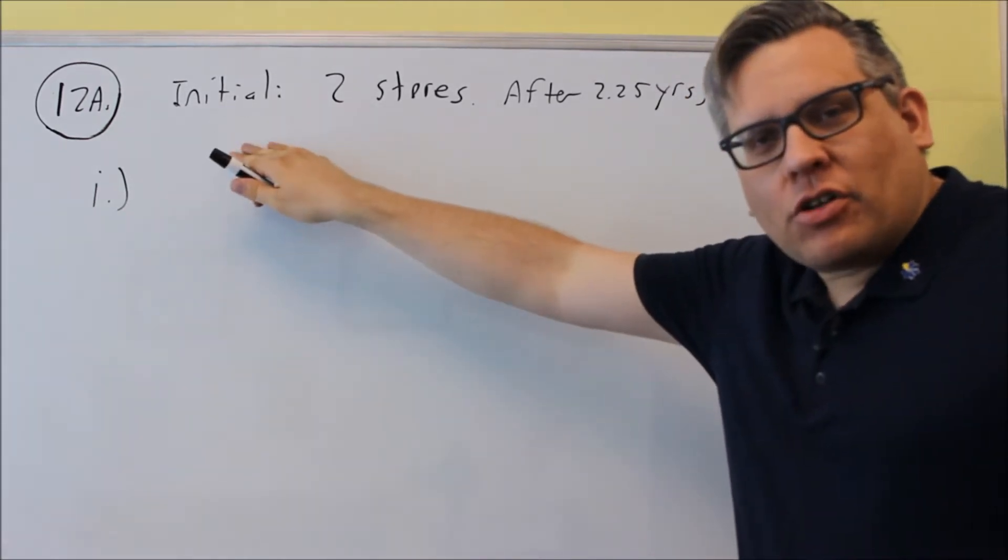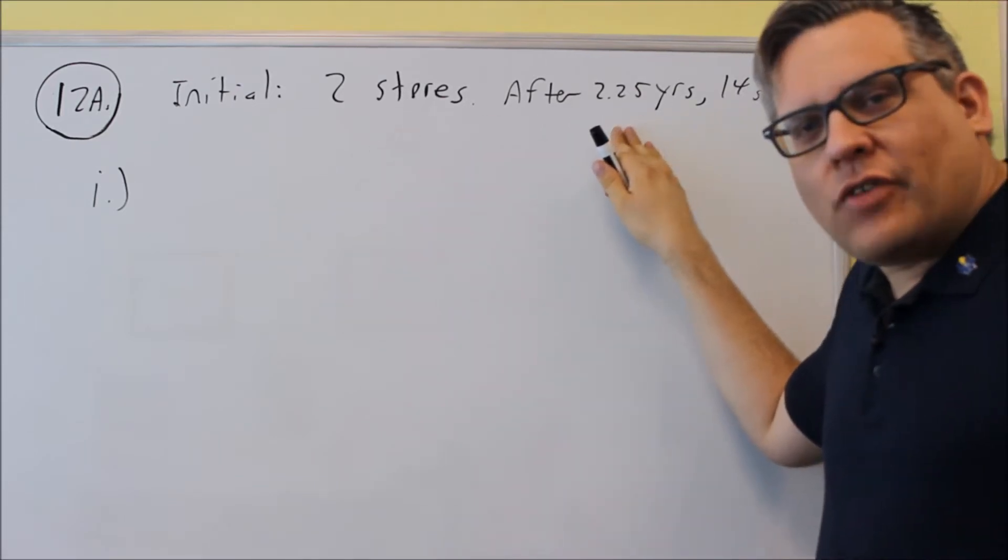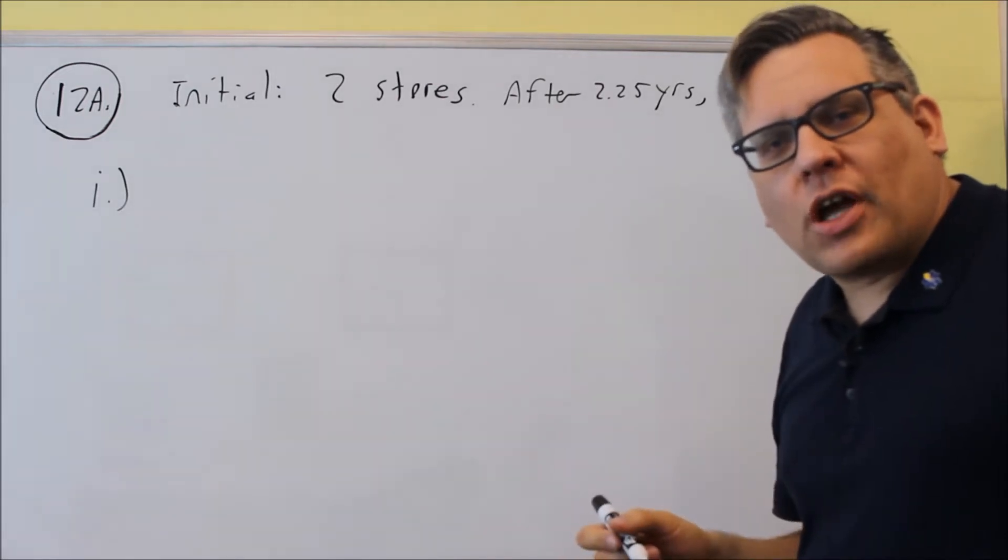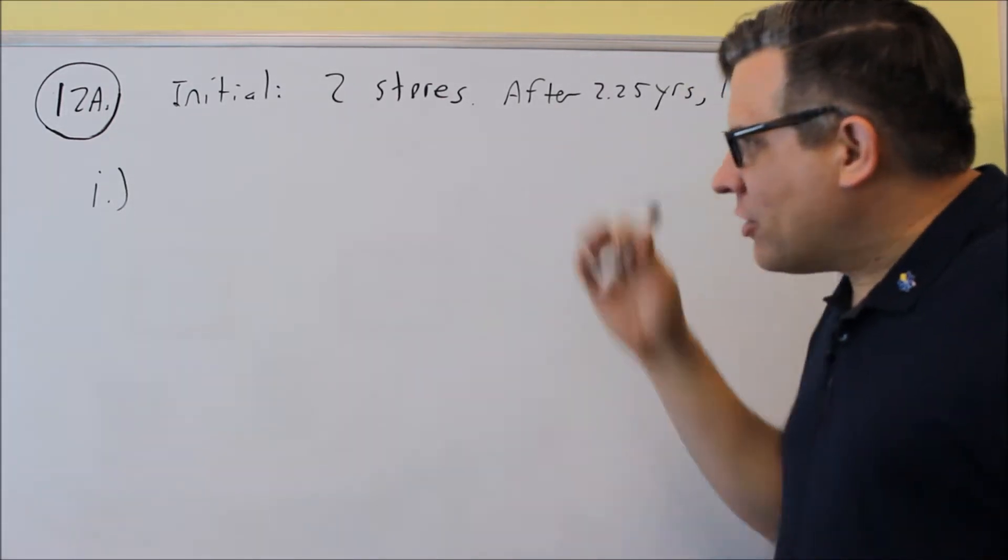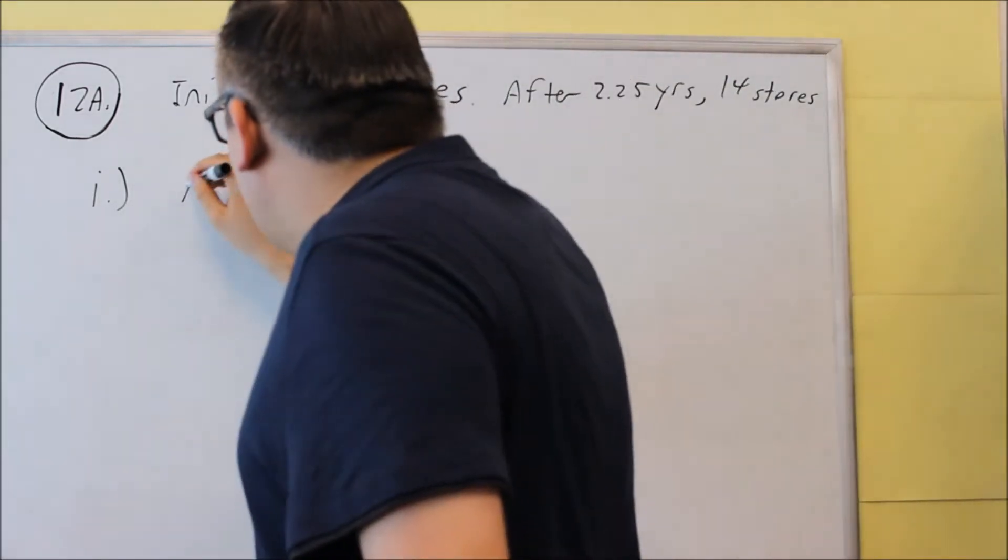So we're given that initially Las Vegas had two Dunkin' Donuts stores and after 2.25 years, it grew to 14 stores. They want you to come up with an exponential growth model that describes this data. So first, we have to start with our main formula here.